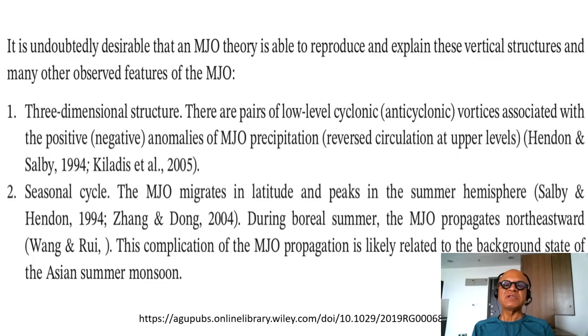It is undoubtedly desirable that an MJO theory is able to reproduce and explain these vertical structures and many other observed features of the MJO. The chapter goes through the structures that we will look at in a table in a minute. Three-dimensional structure, so we are talking about the convergences and divergences and the convective clusters embedded in the planetary scale dynamics and the vertical heating structures, wind structures, which are all critical.